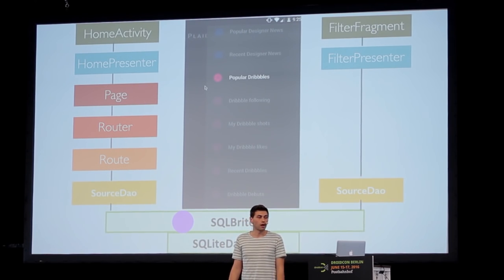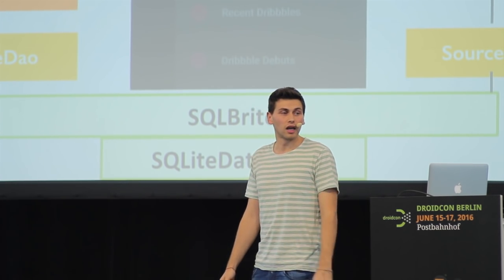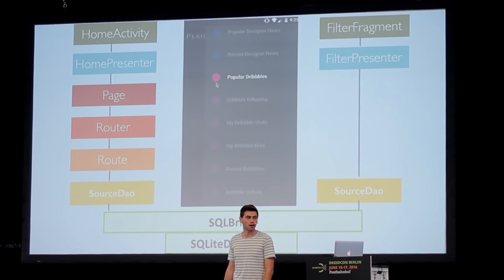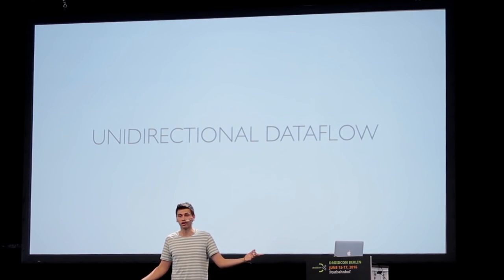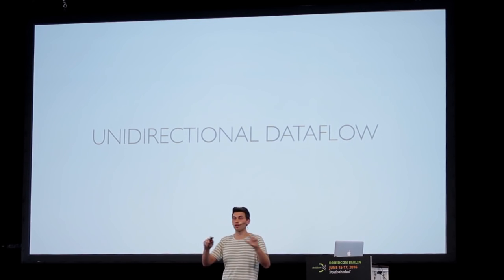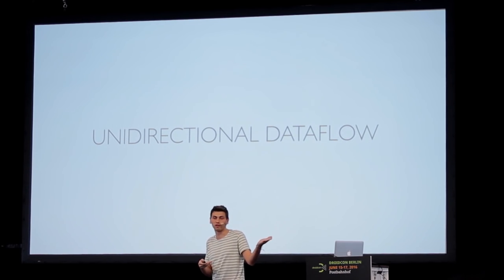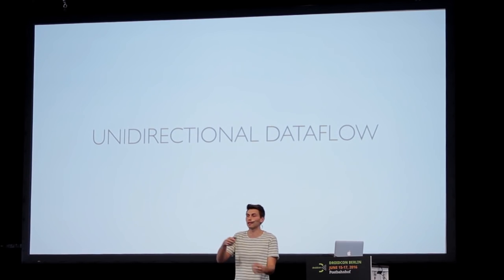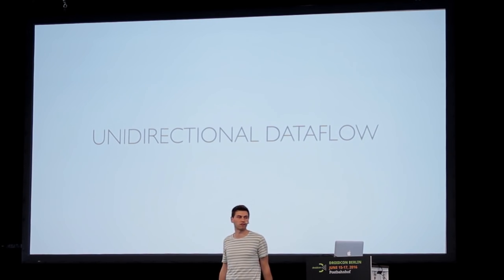The data flows back from the SourceDAO to the Presenter with the new list of sources where Popular Dribbble is enabled. We simply say notifyDataSetChanged. Since sources are immutable — source.setEnabled(true) is not possible in our API — the only thing able to edit the list of sources is the SourceDAO or the underlying SQLBrite database. And on the left side the same query is re-run, the DAO informs the Route, it flows up through the observable chain, and the items are displayed. This is a unidirectional data flow.